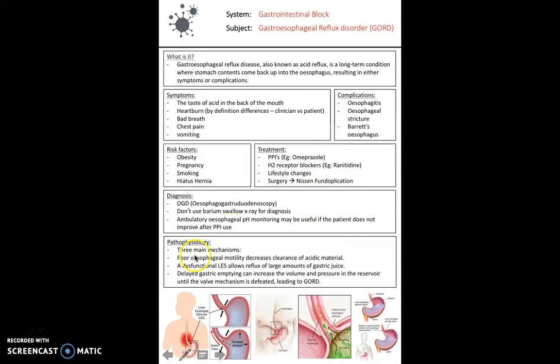In terms of pathophysiology, there are three main mechanisms that can cause gastroesophageal reflux. First is a dysfunctional lower esophageal sphincter, which allows reflux of large amounts of gastric contents into the esophagus. Alternatively, poor esophageal motility decreases the clearance of acidic material. Or, delayed gastric emptying can increase the volume and pressure inside the stomach until the valve mechanism at the lower esophageal sphincter is defeated. Ultimately, it all comes down to that sphincter malfunction.